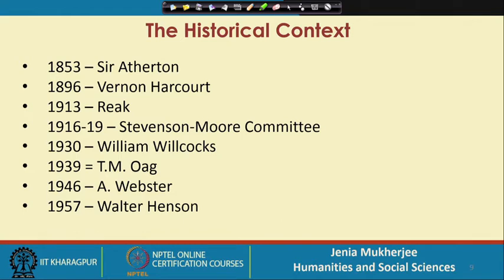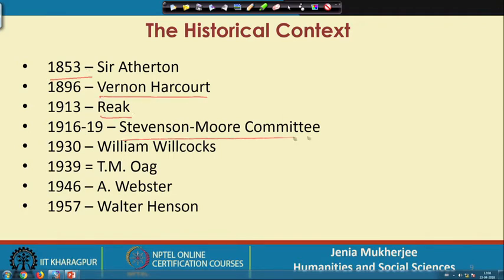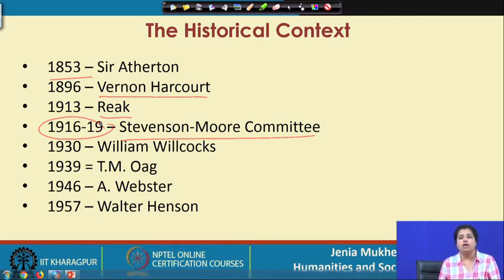As early as 1853, in the opinion of Sir Arthurton, we find from colonial reports that a barrage needs to be constructed at that particular point. This idea was followed by several other colonial officials like Vernon Harcourt, and in the Stephenson Moore Committee Report it was emphasized that the barrage really needed to get constructed. The Stephenson Moore Committee Report was published in 1916 and 1919, and by that time the health of the Kolkata Port was getting more affected — the deterioration level was increasing as the distributory was also deteriorating.